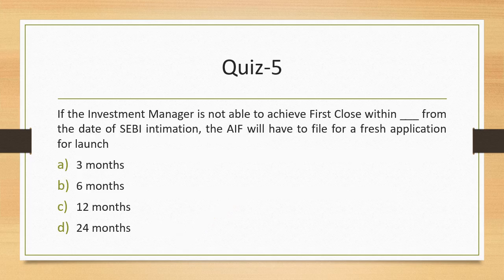Question 5: If the investment manager is not able to achieve first close within how many months from the date of intimation, the AIF will have to file a fresh application? There is a timeline set by SEBI, and that timeline is 12 months. So there would be a risk if the first close is not achieved within 12 months.